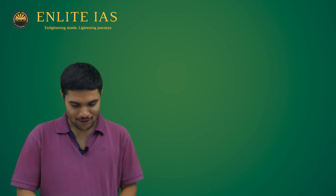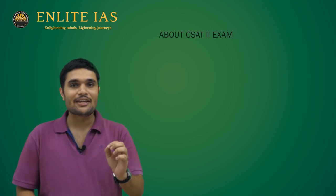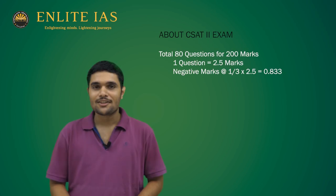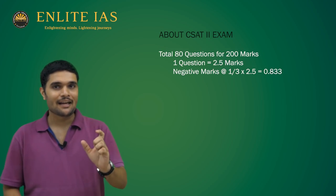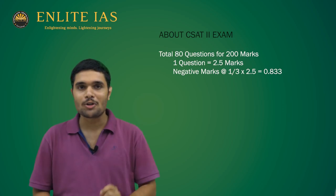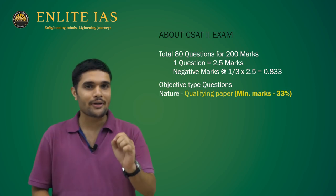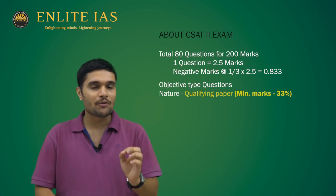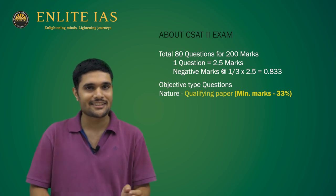You all know the rules of the game. The paper consists of 80 questions, with each question having 2.5 marks and the total marks being 200. The very important next rule everyone should know is how much marks we need to qualify. As you all know, this is just a qualifying paper, but do not underestimate it. Everyone should score at least 33% of the total marks, which comes to around 66-67 marks.